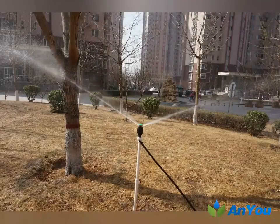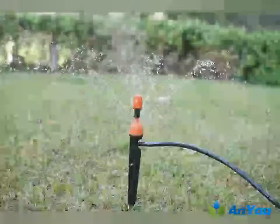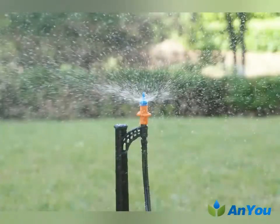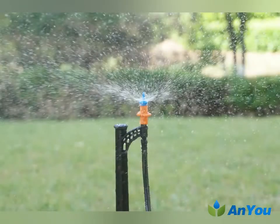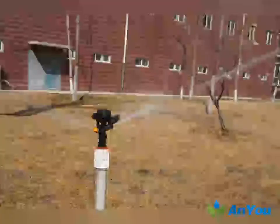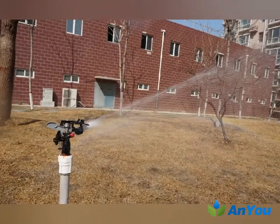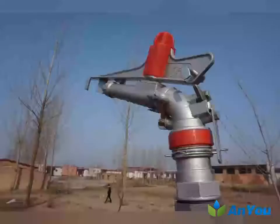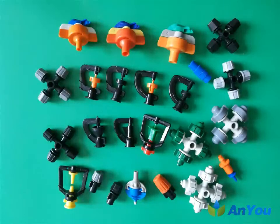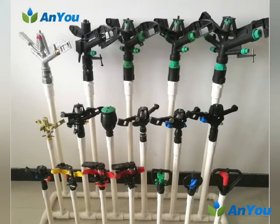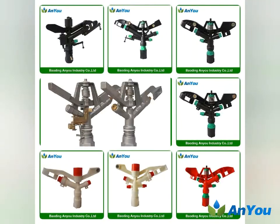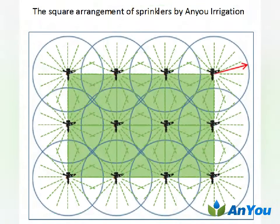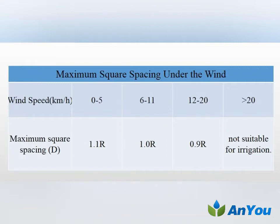Even if the spraying range exceeds part of the boundary, the triangular layout has little influence. This arrangement has strong wind resistance and spraying uniformity higher than rectangular or square layout, and the number of sprinklers used is relatively small. However, it is not easy to balance the flow of each branch pipe. Sometimes the shape of the block is very complex or there are obstacles, making the combination of sprinklers irregular. NU Irrigation suggests using square or triangular layouts as far as possible.